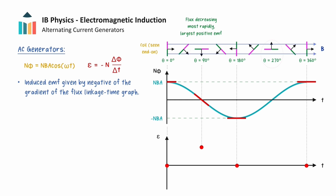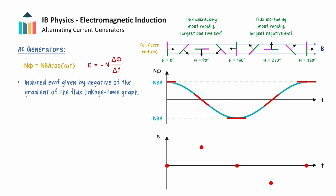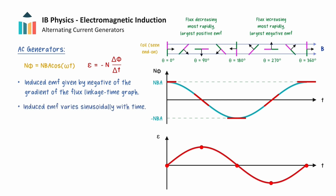Conversely, when theta equals 270 degrees, the flux is increasing most rapidly, and the gradient will assume its maximum positive value. So the EMF induced at this time will be the most negative. When we repeat this analysis at each time, we find that the induced EMF varies sinusoidally with time, as shown by the red line on the graph. This EMF is known as an alternating voltage, because it repeatedly changes direction. Notice how there is a 90 degree phase lag between the flux and the induced EMF.